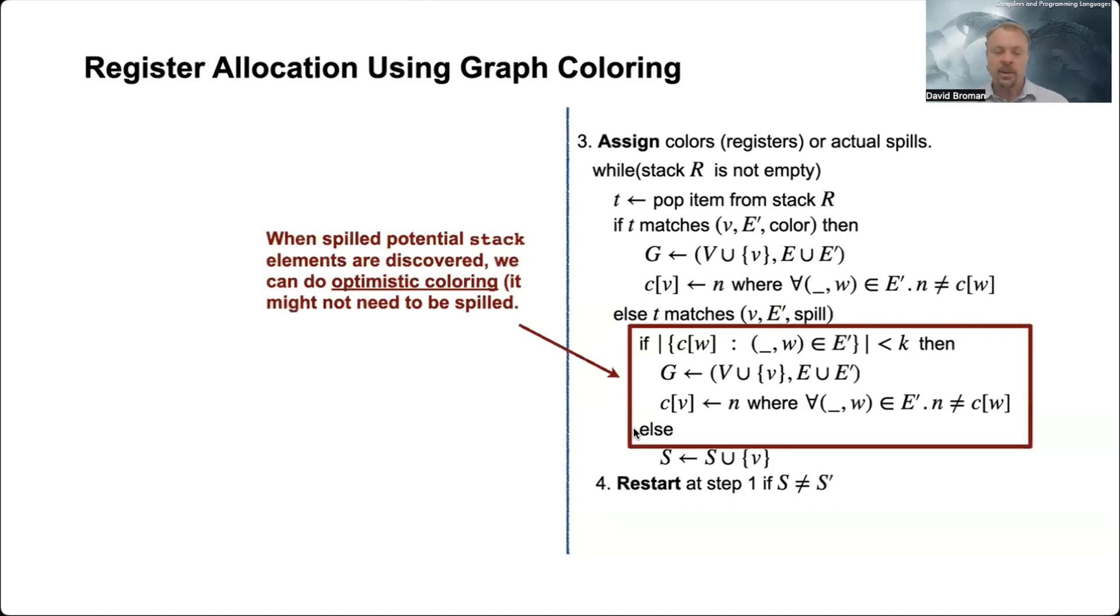It's set builder notation. We're looking at all the nodes that are connected here in this new node - the color of them - and create a set of that. So we see all the different colors, all the registers actually used, that are directly connected to this vertex v.